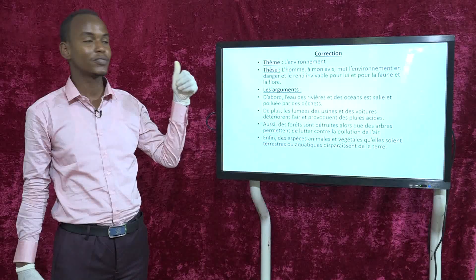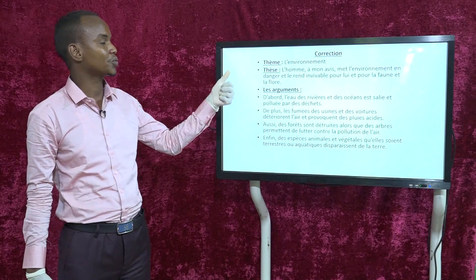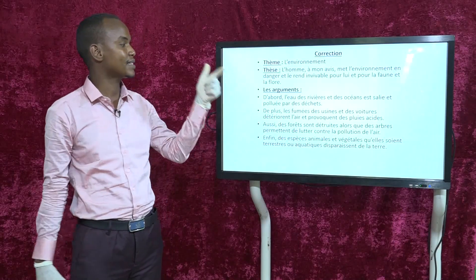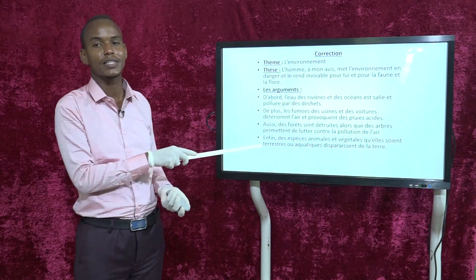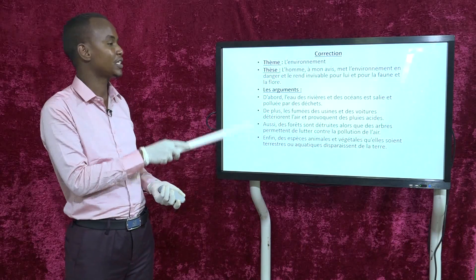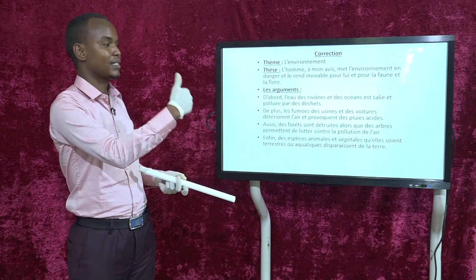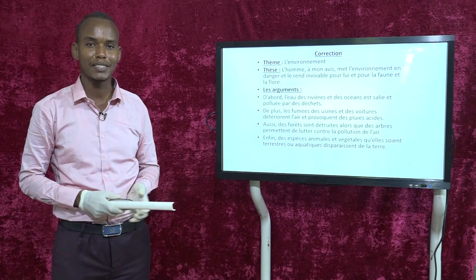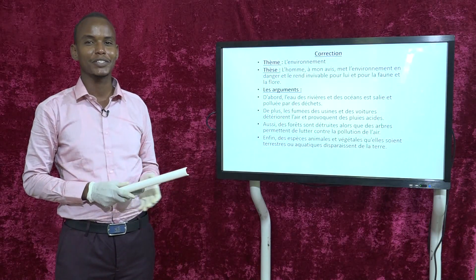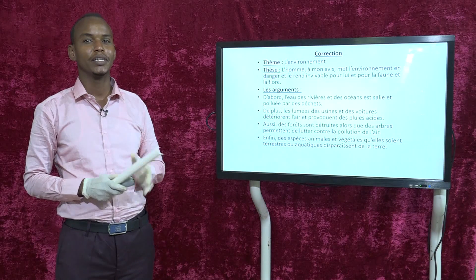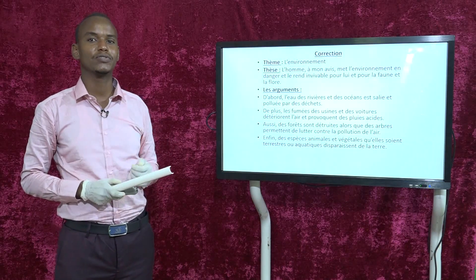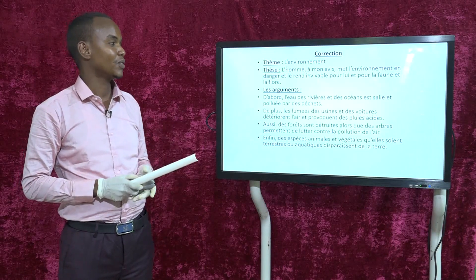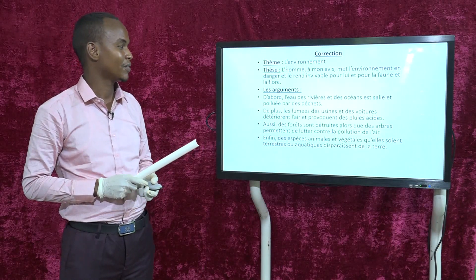J'espère que vous avez tout retrouvé : le thème, la thèse et les arguments. Les mots qui vous ont permis de retrouver les arguments sont : d'abord, de plus, aussi, enfin — qu'on appelle les connecteurs logiques, qui vous ont permis de classer les arguments. Je remercie les parents qui ont suivi avec nous et ont aidé leurs enfants à mieux comprendre la leçon. Bonne chance.